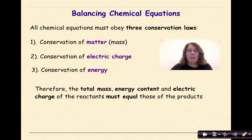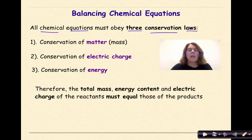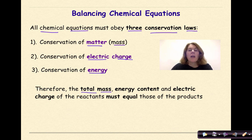Balancing chemical equations. All chemical equations must obey three conservation laws: the conservation of matter or mass, the conservation of electric charge, and the conservation of energy. Therefore, the total mass, energy content, and electric charge of the reactants must equal those of the products.